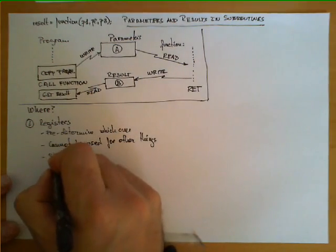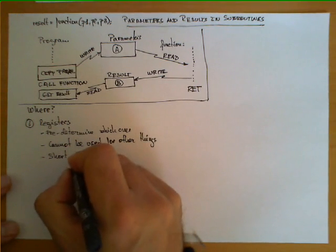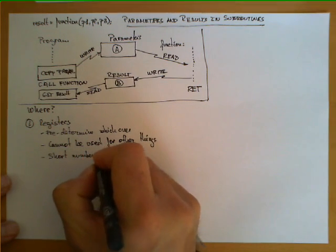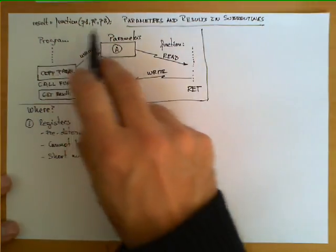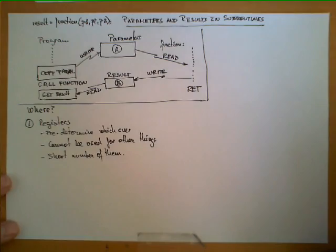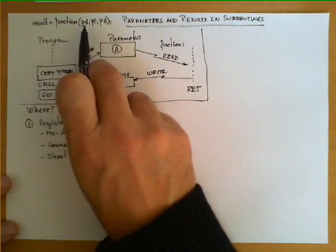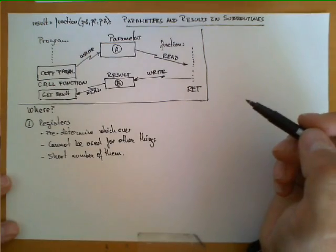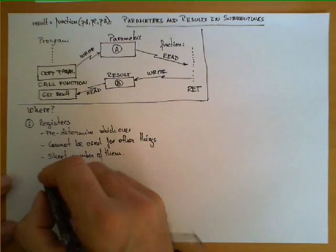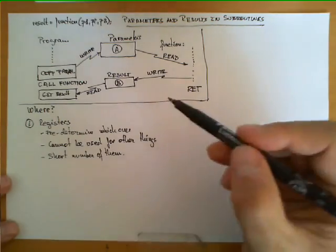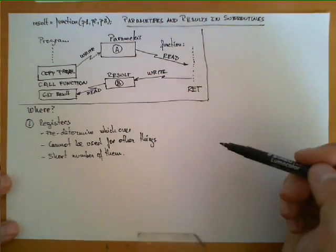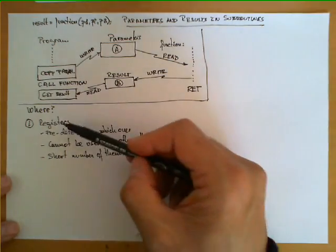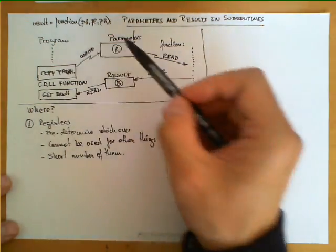We also have a problem with this solution: we have a limited number of registers. This is an example with three parameters, but what would happen if our function has 15 parameters, or even worse — and programming languages allow that — we define a function that has a variable number of parameters. So it doesn't work, or it works only for very specific cases in which the number of parameters is restricted. We need alternatives for cases in which we cannot use registers or we have too many parameters.